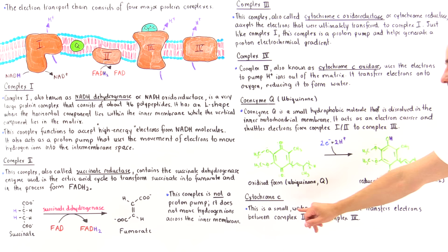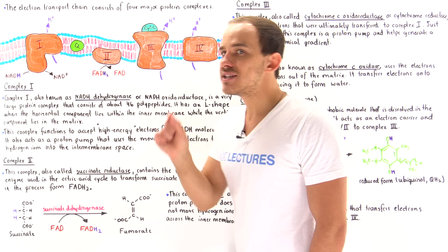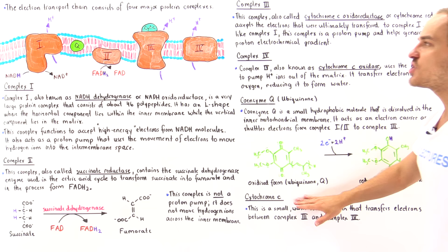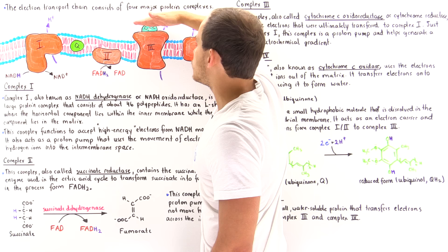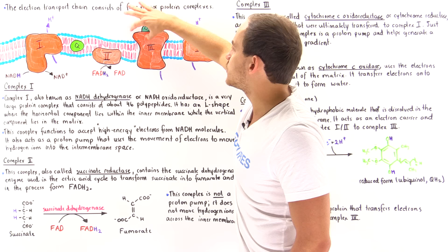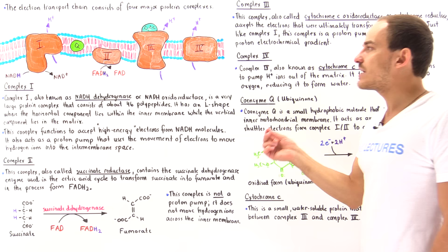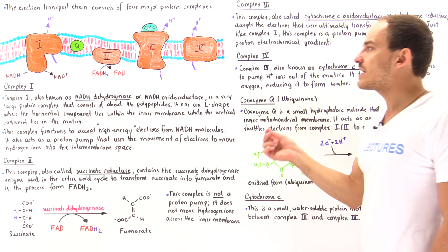Cytochrome C, unlike coenzyme Q, is a small water-soluble protein — coenzyme Q is not a protein, but cytochrome C is. It is bound onto the intermembrane region of complex 3, and once it accepts those electrons, it moves and attaches onto protein complex 4. It then transfers those electrons, which are ultimately used to reduce oxygen and form water molecules, as we'll see in much more detail in lectures to come.